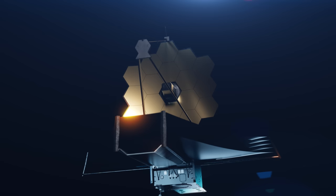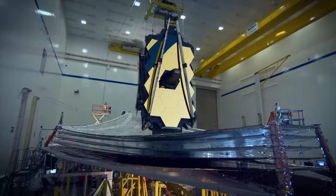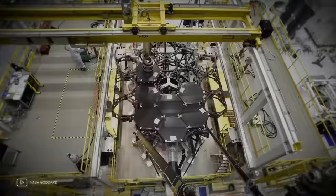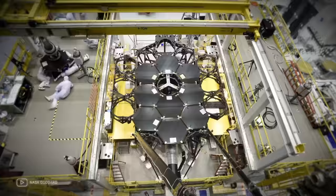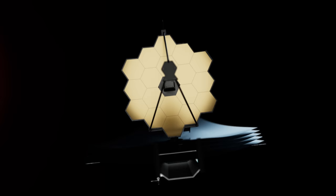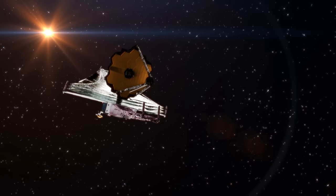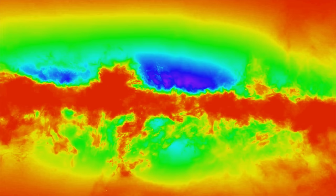One of the most innovative features of the JWST is its cool screen technology. This is no ordinary sunshade. It's a multi-layered engineering genius the size of a tennis court that blocks the heat of the sun, Earth, and moon. Why is this important? Because it allows the telescope to cool to incredibly low temperatures, increasing its sensitivity to the faint infrared signals emitted by distant celestial bodies.